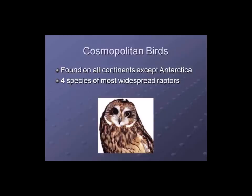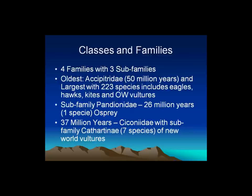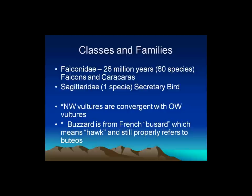The most cosmopolitan raptor species are found on all continents except Antarctica. Four species are widespread in this way: the short-eared owl, the peregrine falcon, the barn owl, and the osprey — found just about everywhere in the world.